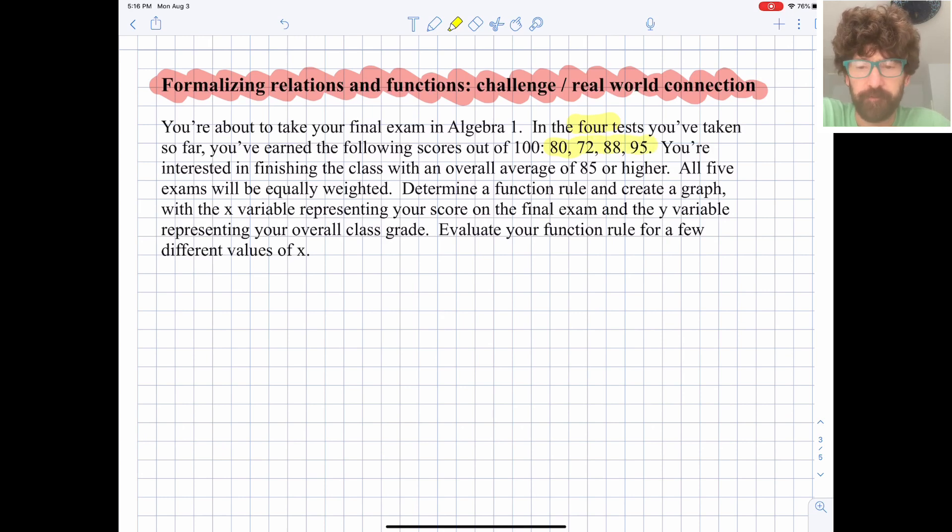You're interested in finishing the class with an overall average of 85 or higher, so maybe a B or a B+. All five exams will be equally weighted, so we want to determine a function rule and create a graph with the x variable representing your score on the final exam. That's important to remember. And the y variable representing your overall class grade.